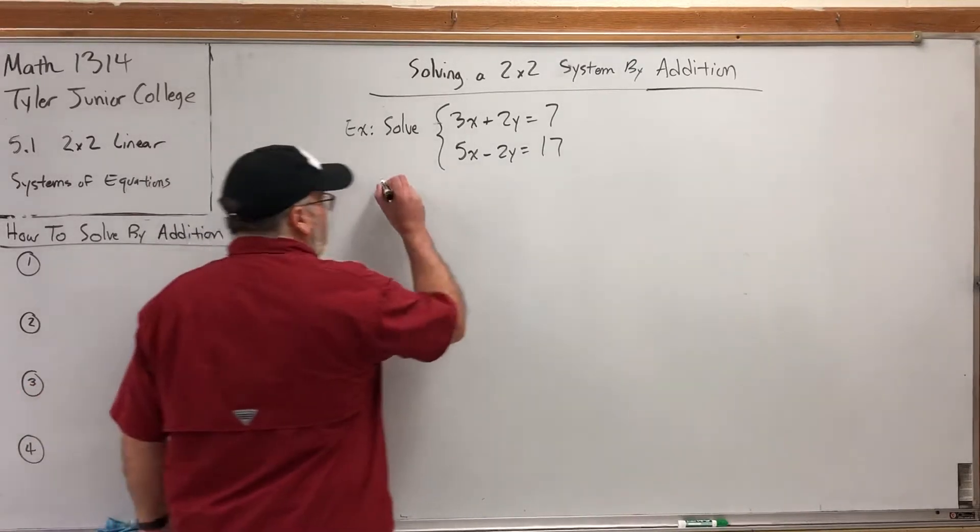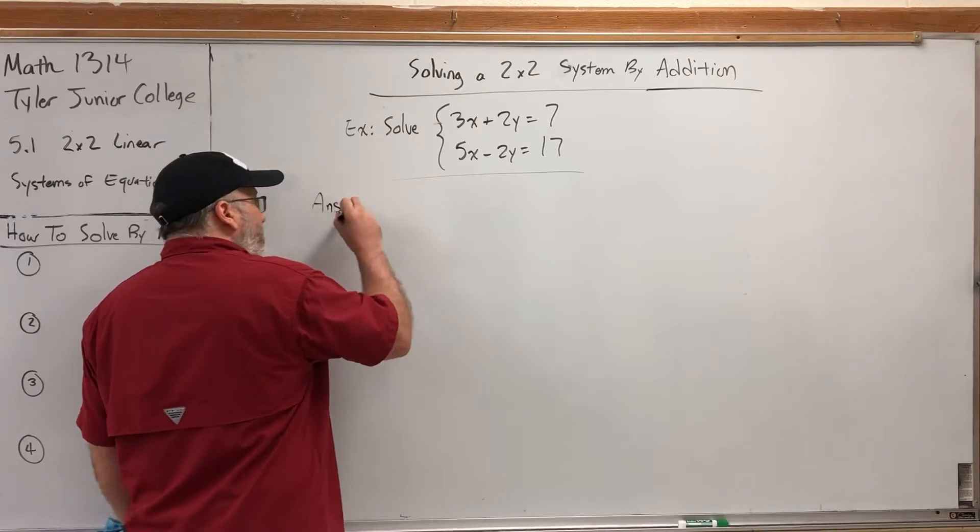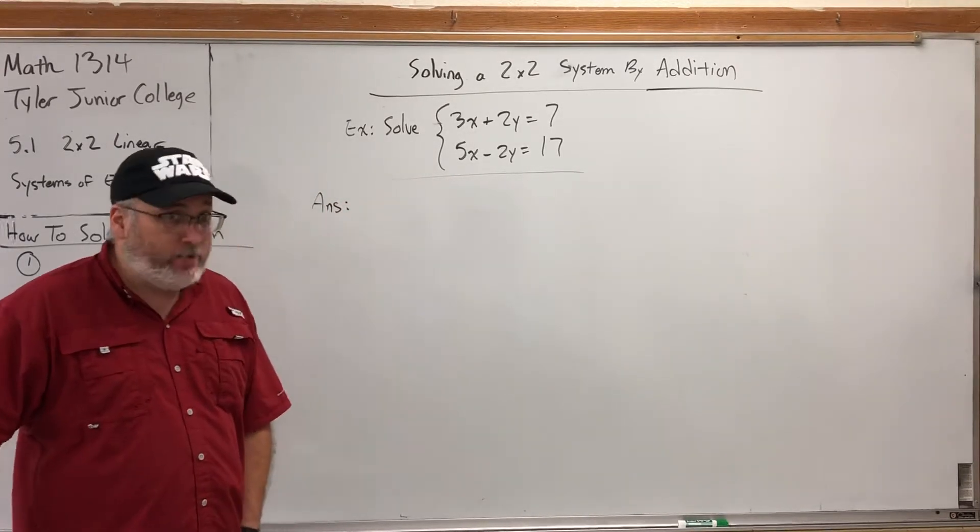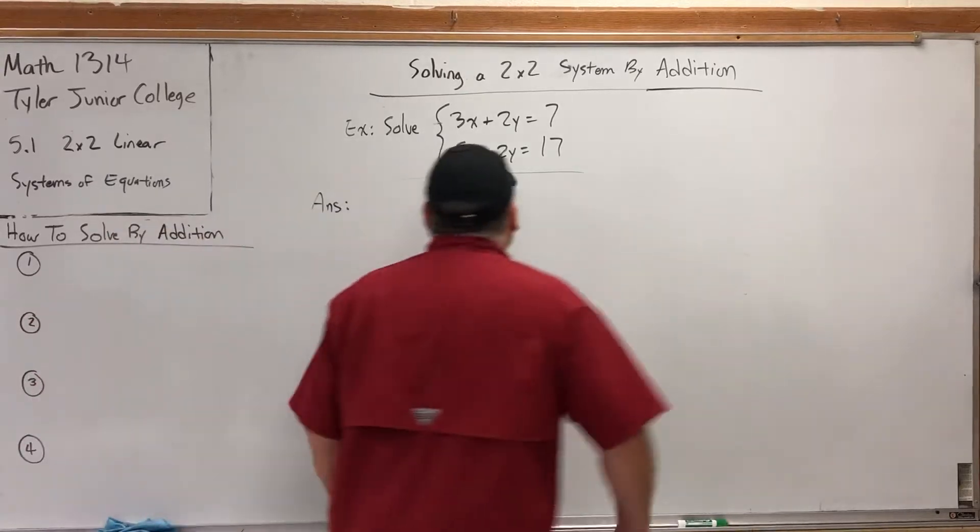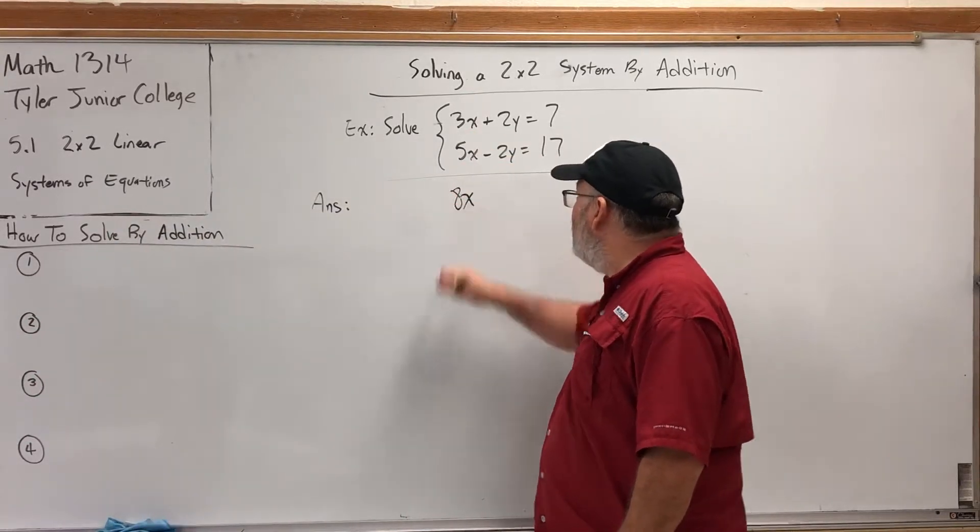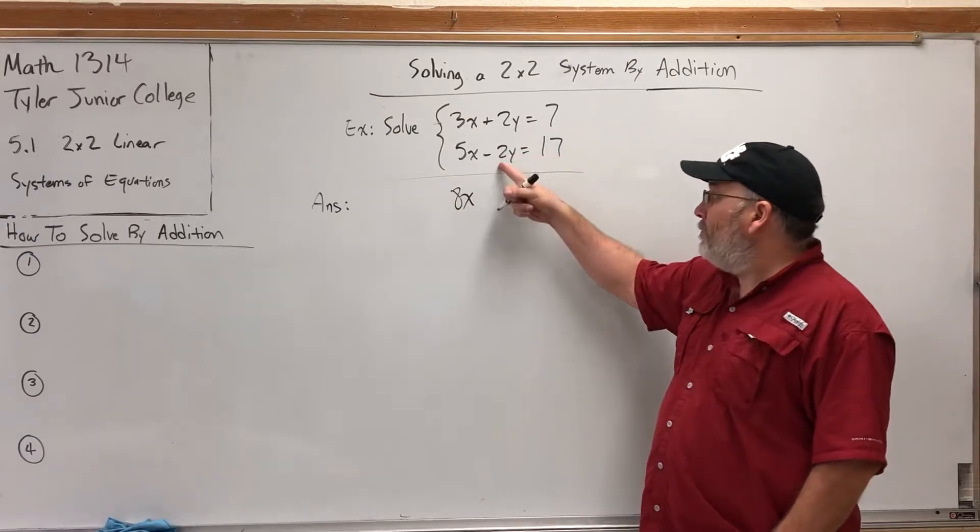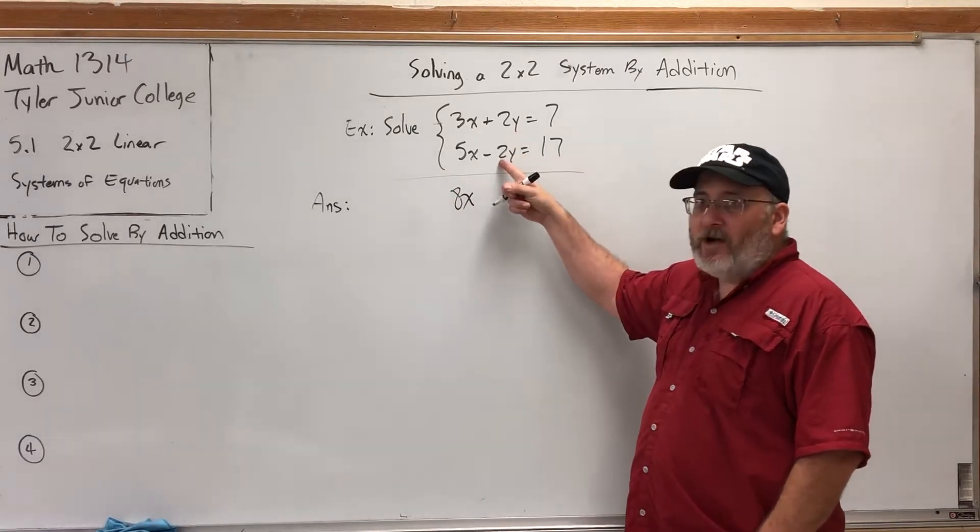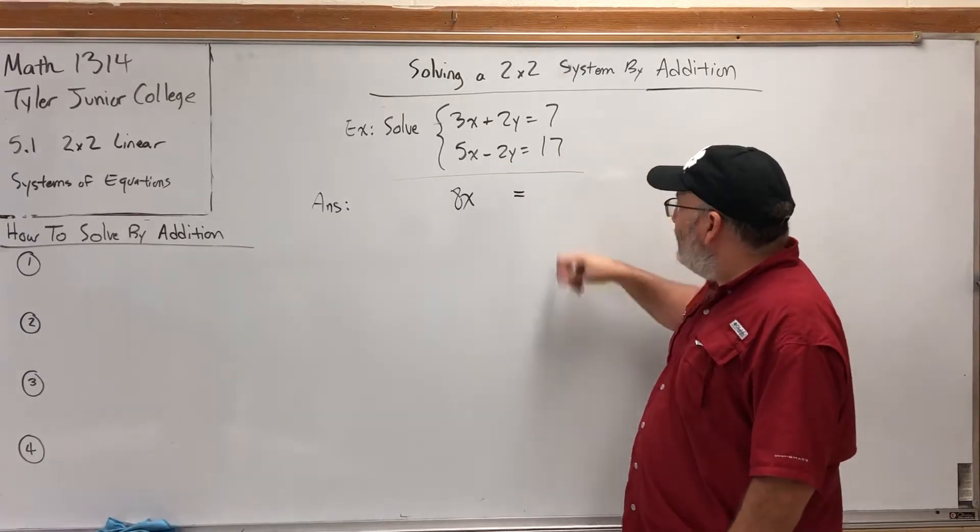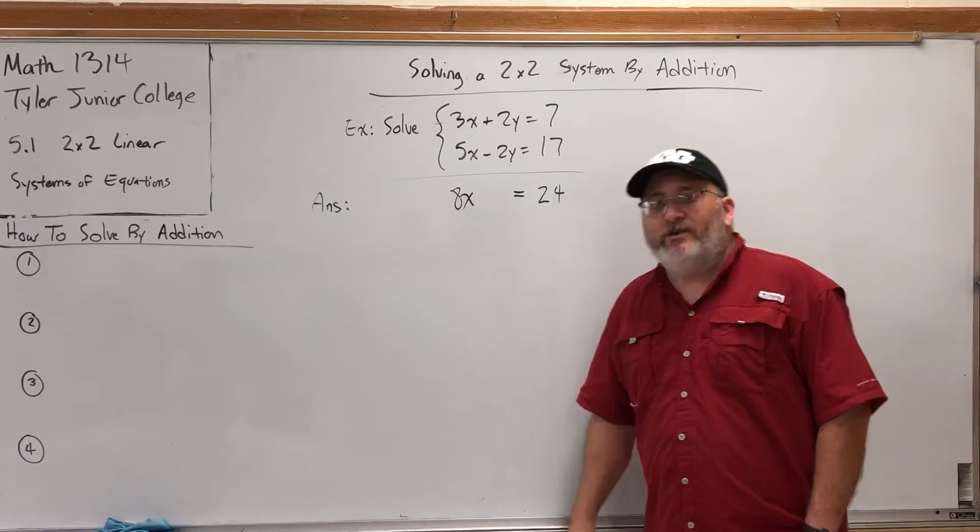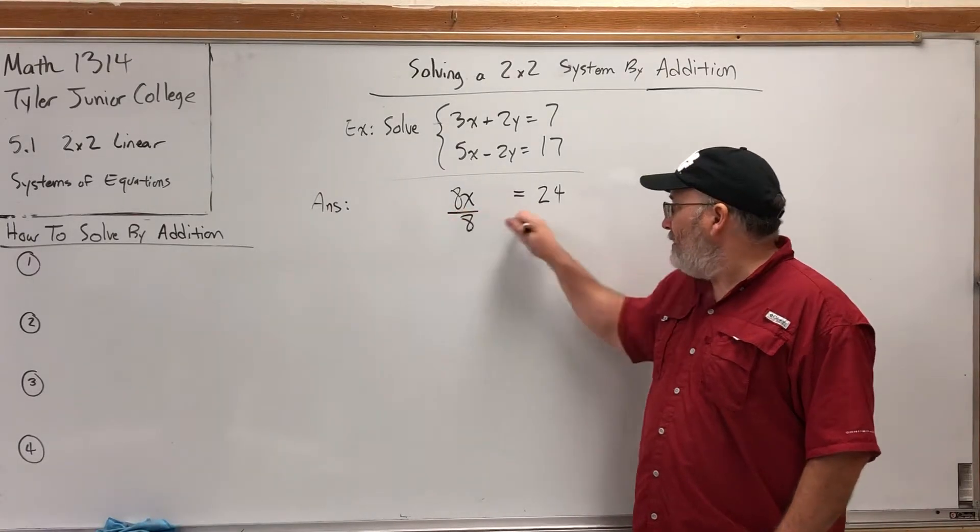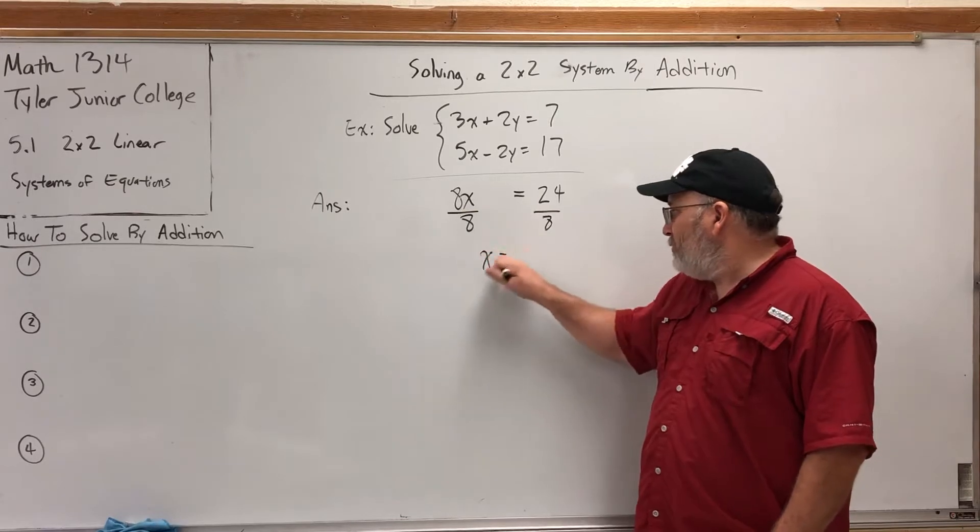So watch this. If we start by adding up everything and keeping the equal sign where it is, here's what would happen. 3x plus 5x is 8x. Positive 2y and negative 2y are opposites. They cancel. There's my equal sign. 7 plus 17 is 24. And just like that, I'm down to a 1 by 1 system. Then I can solve in one move. Divide by 8. Boom. X equals 3.